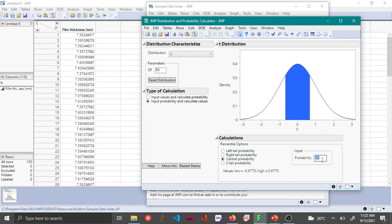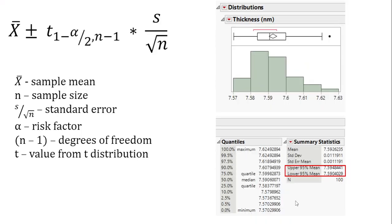So here if you change the probability to 0.95 and then hit Enter, you can see that the t-value is 1.9842. So now if you put in the t-value, we already have the mean value here and we have the standard error.